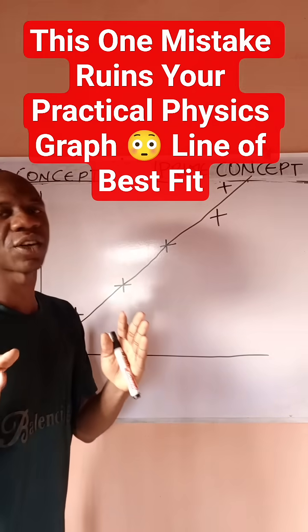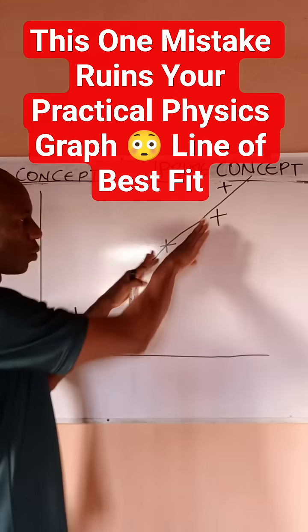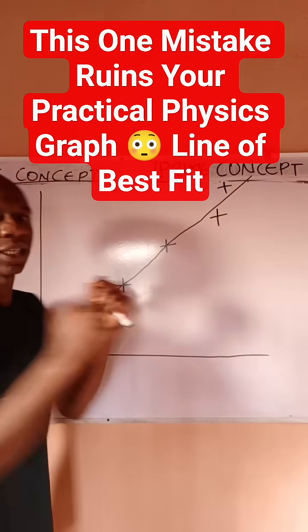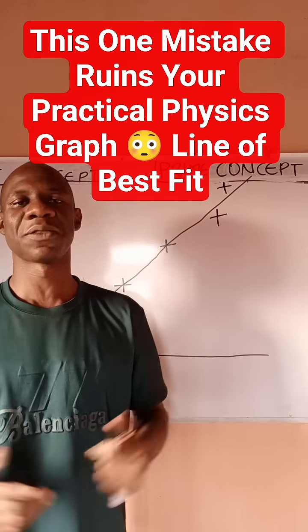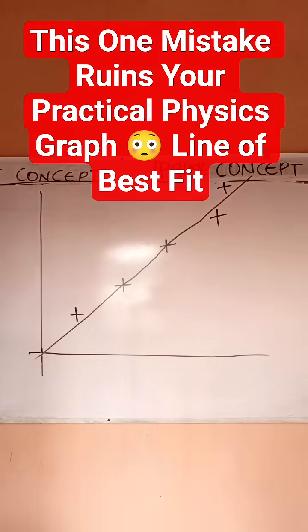If you have four points that are not accommodated, how do you draw? You place two here, place two here. I believe this is very clear to you. Thanks for watching Prime Concept.